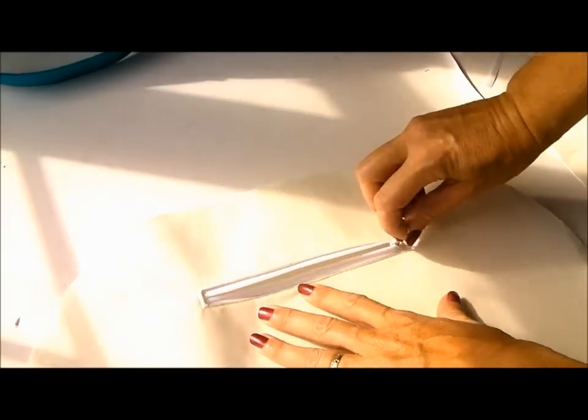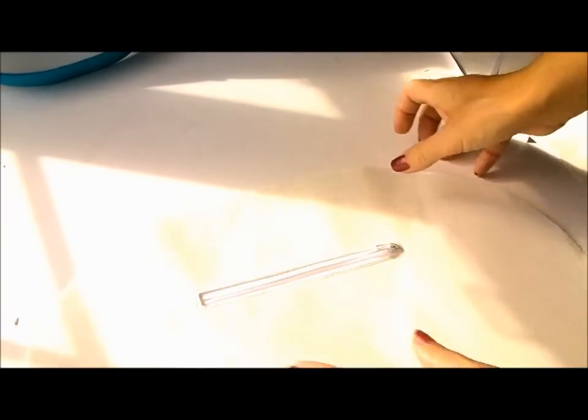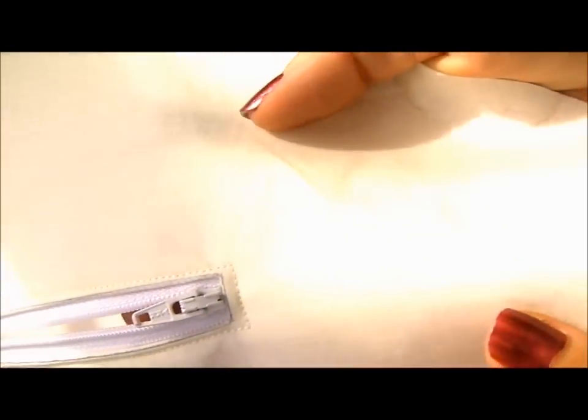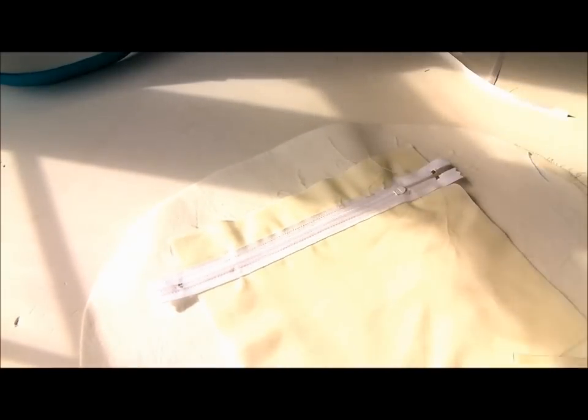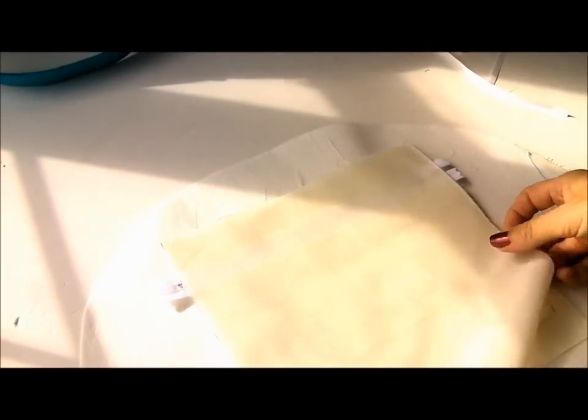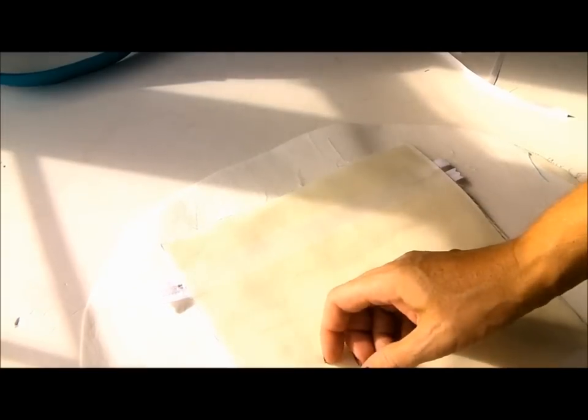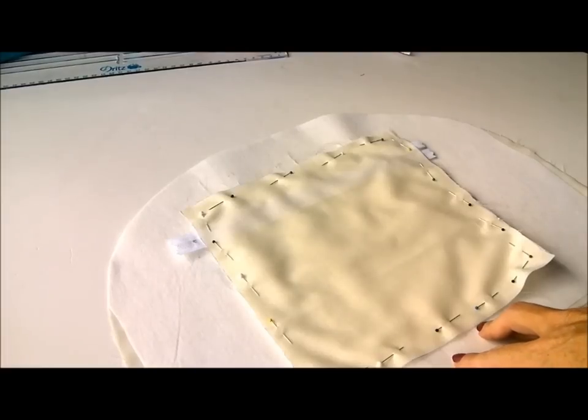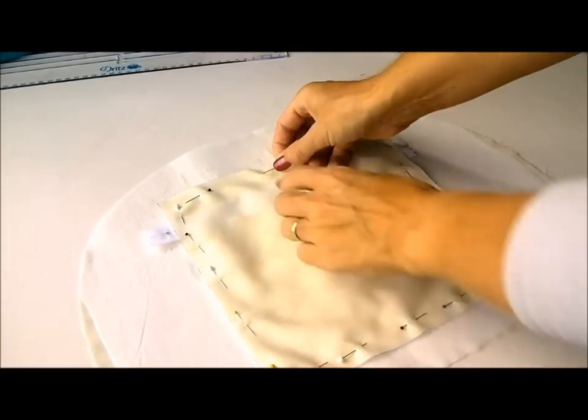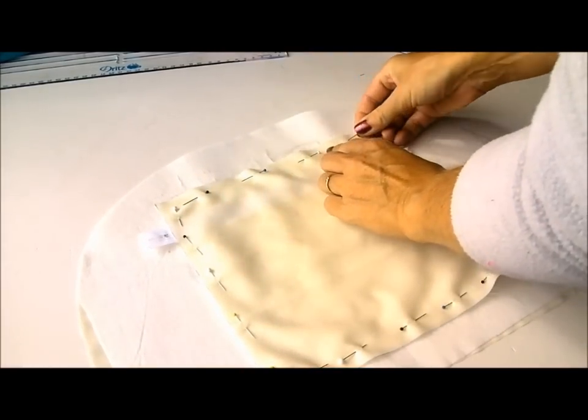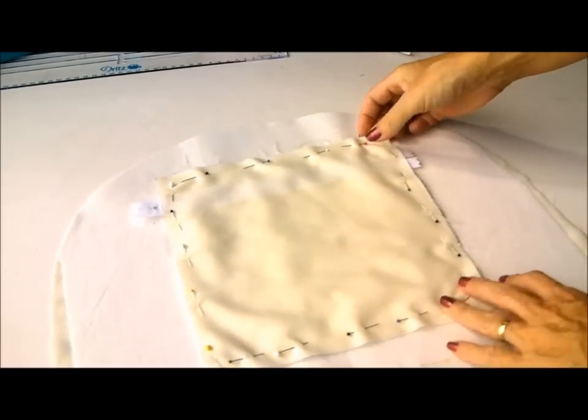That's it done from the front. Zipper now in place, top stitched all around and looking good. Now we need to go to the back and take our other pocket lining piece and we'll just match it up, pin in place.